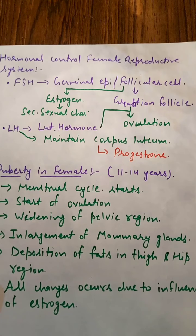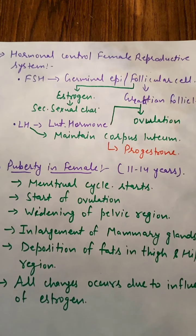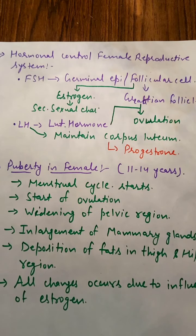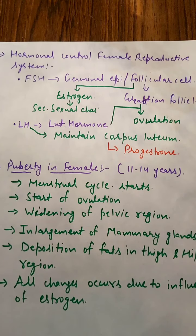This was the hormonal control on the female reproductive system. Puberty in females occurs between 11 to 14 years of age. The first sign of puberty is that the menstrual cycle will start. The cycle of ovulation will begin — ovulation meaning the release of the egg — and the menstrual cycle starts.